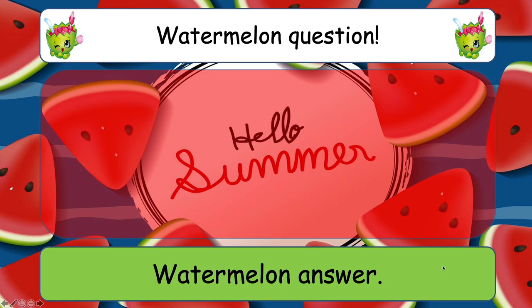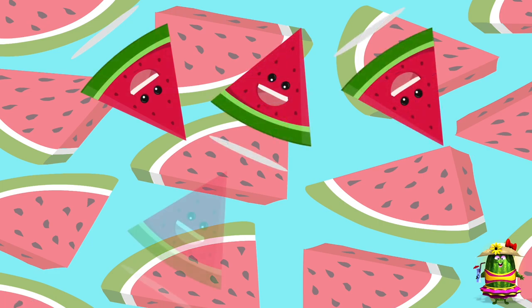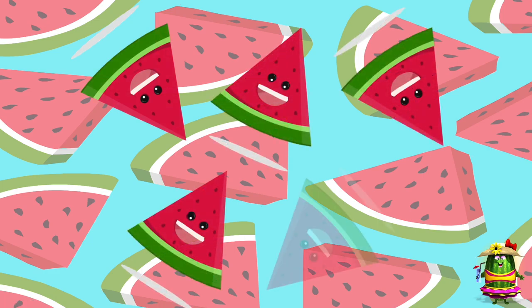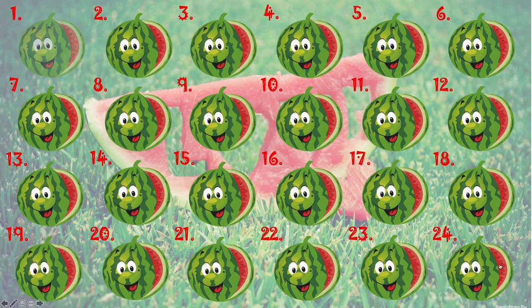Click on the green rectangular box or press the space bar key and then the points will come up. On question number one there are five points. In the bottom right hand corner there is a small cute watermelon character — just click on her and she will take you back to the main screen.